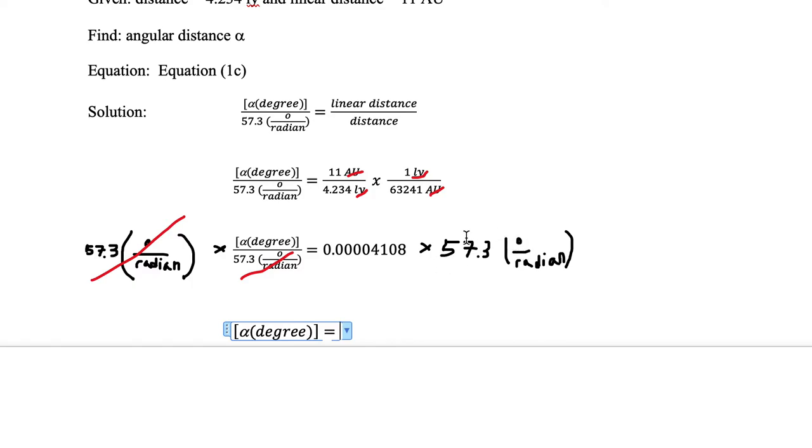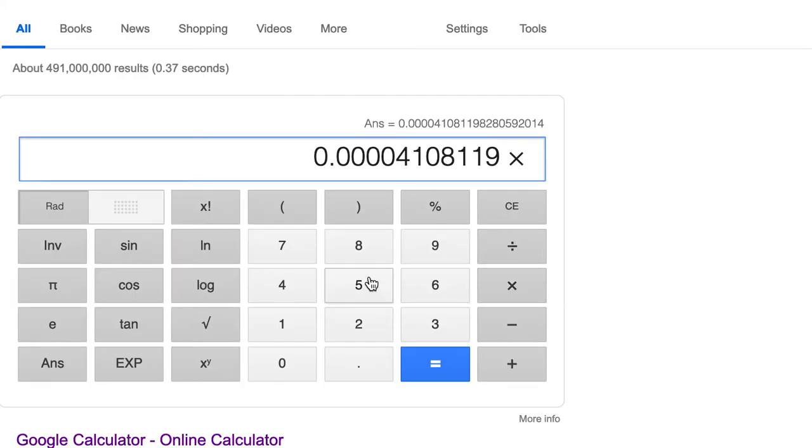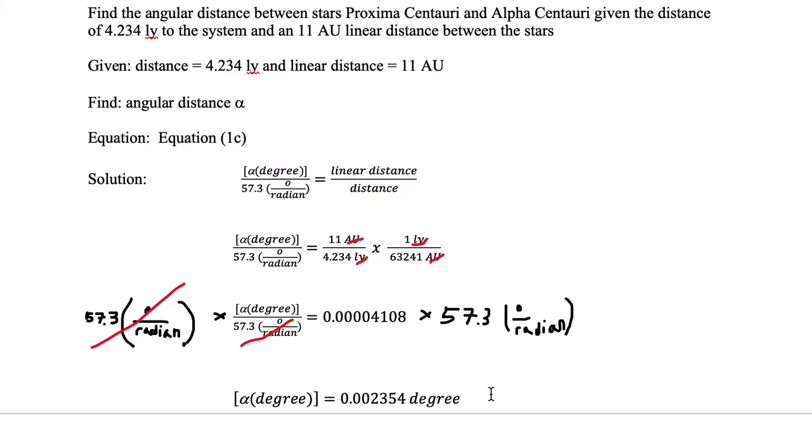We have to multiply 57.3 by that very small number. Let's go back to our Google calculator. Now we're going to multiply by 57.3 and hit the equal sign, and now we've got a better number, 0.00235. We can round these up. 95 is greater than 50, so we can round this up to 4: 0.2354.